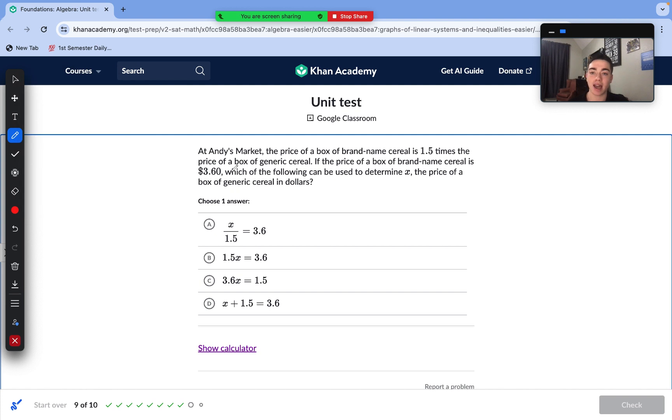Onto our second to last question here. At Andy's Market, the price of a box of brand name cereal is 1.5 times the price of a box of generic cereal. The price of a box of brand name cereal is $3.60. Which of the following can be used to determine x, the price of the box of generic cereal in dollars? So we know that our brand name cereal is going to be 1.5 times more expensive. So to find our generic cereal, we need to divide our 3.6 by 1.5 somehow. We need to check which of our answer choices ends up dividing our 3.6 by 1.5. With answer choice A, to solve this, we would actually end up multiplying 3.6 by 1.5 in order to isolate the variable. So answer choice A is incorrect. With answer choice B, to isolate our x, we do indeed divide by 1.5. We do 3.6 divided by 1.5. That would find the correct answer, which means that B is the correct answer.